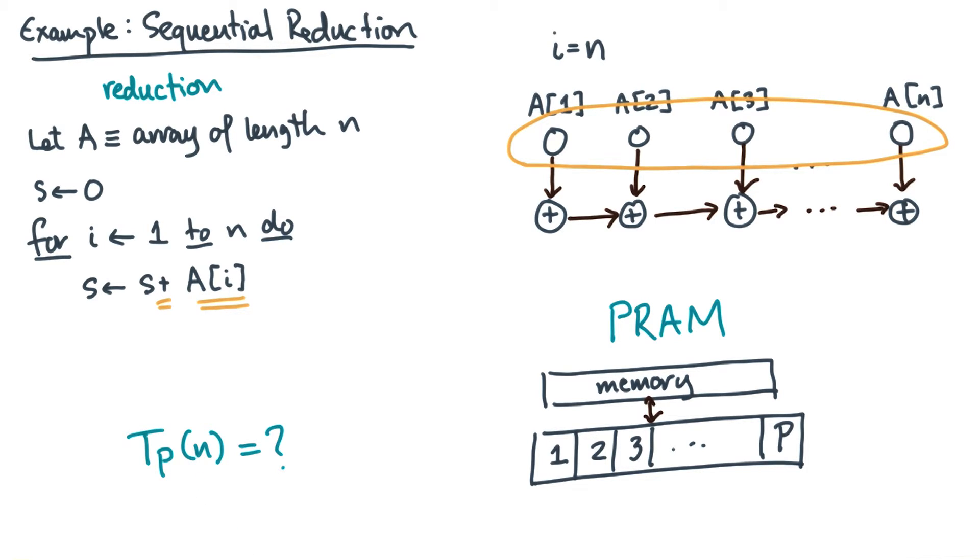Now notice that the loads have no input dependences. They're all ready to go, so you could take them as a group, assign them to the P processors, and execute them in batch. So in our cost model, that would take ceiling of N divided by P units of time.